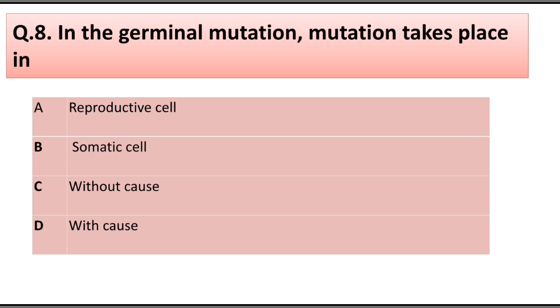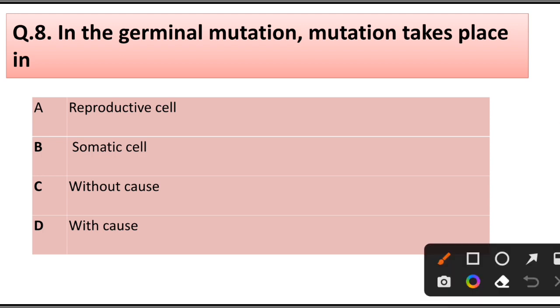Question number 8. In germline mutation, the mutation takes place in: reproductive cell, somatic cell, without cause, or with cause. Answer is option A: Reproductive cell.